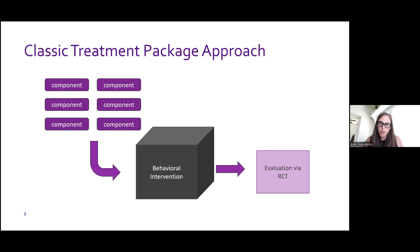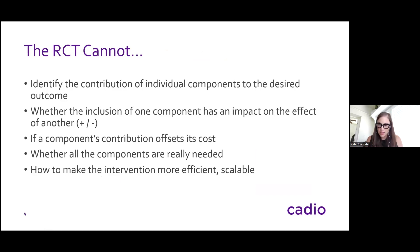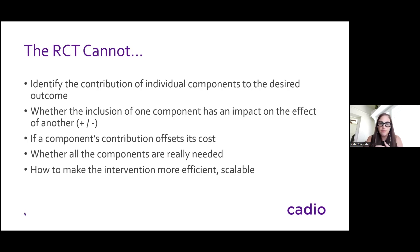There's nothing wrong with the RCT. However, the RCT cannot help us identify the contribution of each of those components on the outcome of interest. We're also not able to decide whether the inclusion of one component has a positive or negative impact on another — how they're interacting. We have no idea if a component's contribution towards the outcome offsets its cost. Think, for example, motivational interviewing: it takes a lot to train people and a lot of time to deliver it. Is it worth it? We're not able to determine that in the RCT.